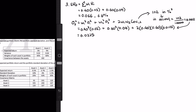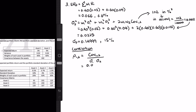Plugging it all into the formula gives us 0.0225 as the portfolio variance, and the standard deviation of the portfolio is the square root of that. Square root of 0.0225 gives us approximately 15%. There's one more step: the question also asks for the correlation. Correlation equals the covariance of two assets divided by the product of their standard deviations. Plugging in 0.0102 for covariance and the square roots of 0.02 and 0.04 for the standard deviations gives us 0.36 as the correlation.